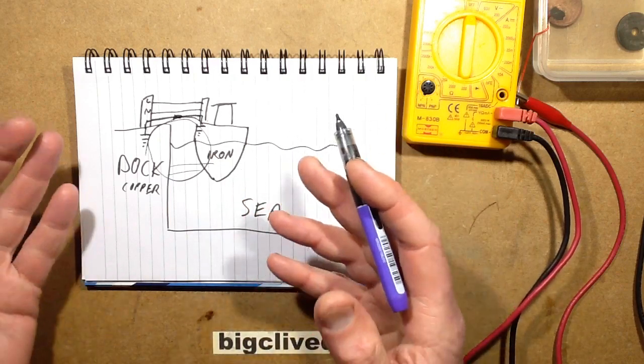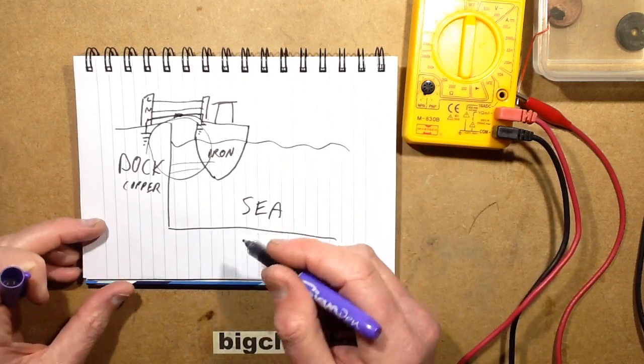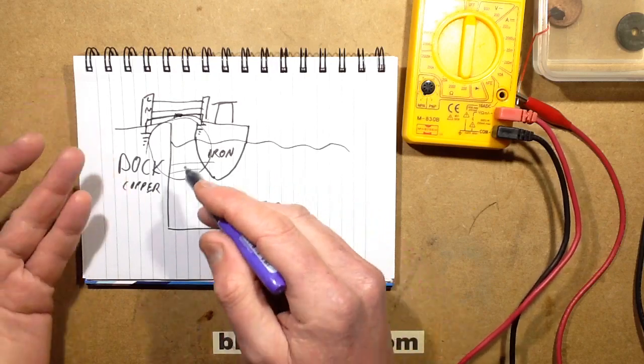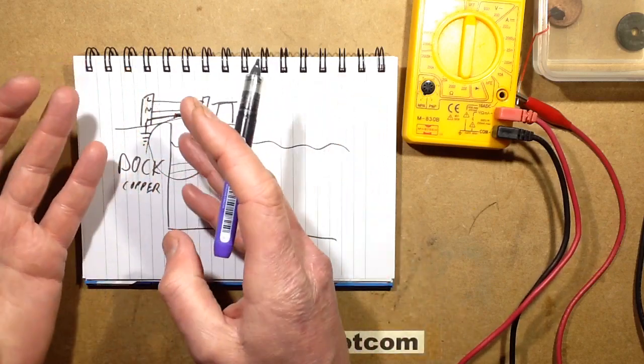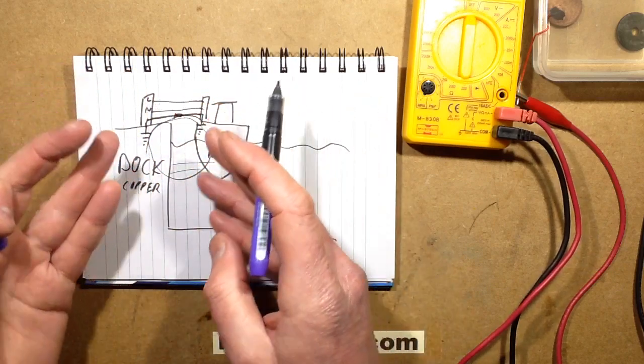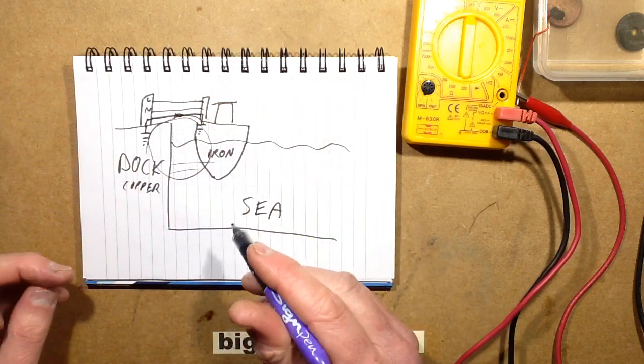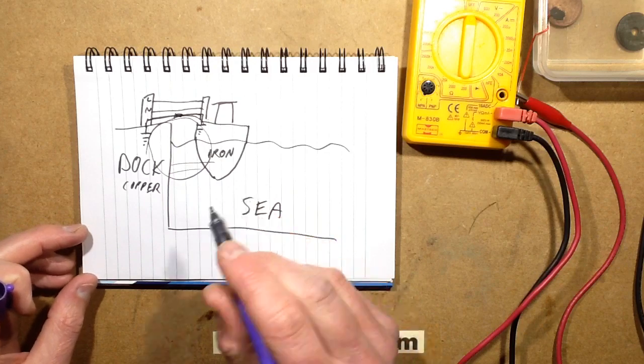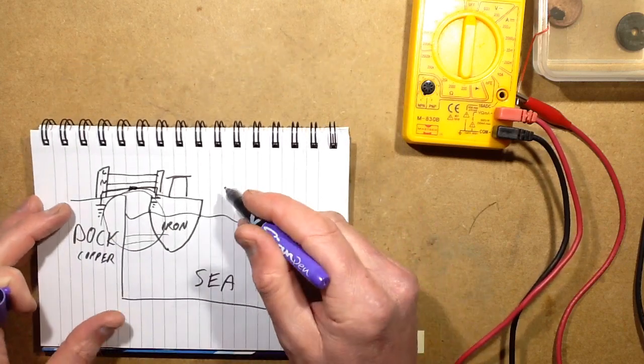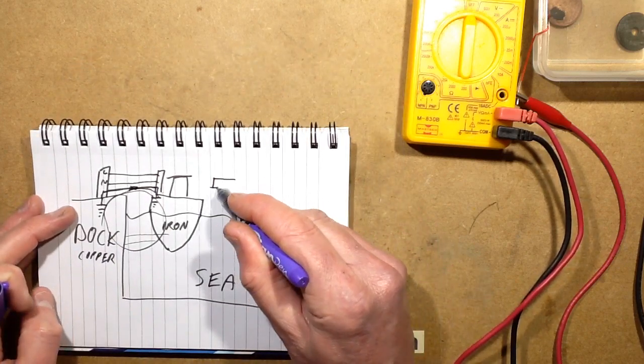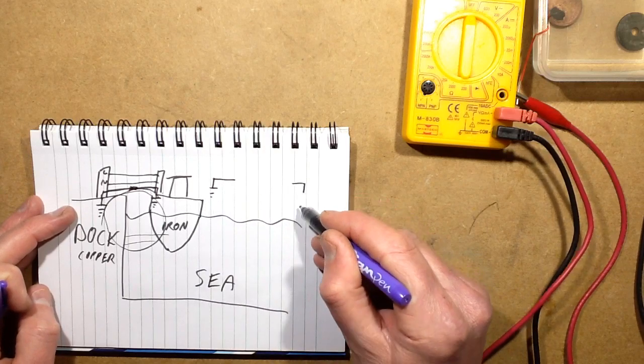Otherwise the whole boat could become live with respect to the dock. If you touched it there could be some current. The earth connection has to be in place. So what they do is they put what's called a galvanic isolator on the earth connection. If this is one end of the earth connection and that's going to the boat...